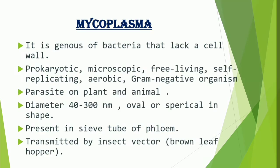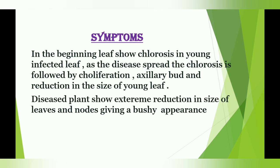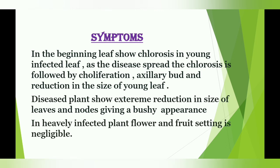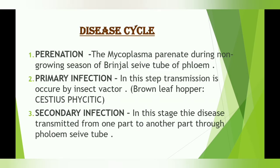The pathogen is transmitted by the insect vector, the brown leafhopper. Symptoms: in the beginning, leaves show chlorosis in young infected leaves. As the disease spreads, chlorosis is followed by proliferation of axillary buds and reduction in the size of young leaves. Diseased plants show extreme reduction in size of leaves and internodes, giving a bushy appearance. In heavily infected plants, flower and fruit setting is negligible.